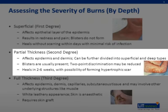In a partial thickness burn, both the epidermis and the dermis are affected. This may be caused by splashes from hot liquid, and blisters are characteristically present. They can take anywhere from two to six weeks to heal. In this type of burn, a portion of the epithelial appendages remain, thus they are able to heal the skin without having to perform a skin graft. However, deeper partial thickness burns have less viable epithelial appendages and are more prone to hypertrophic scarring.